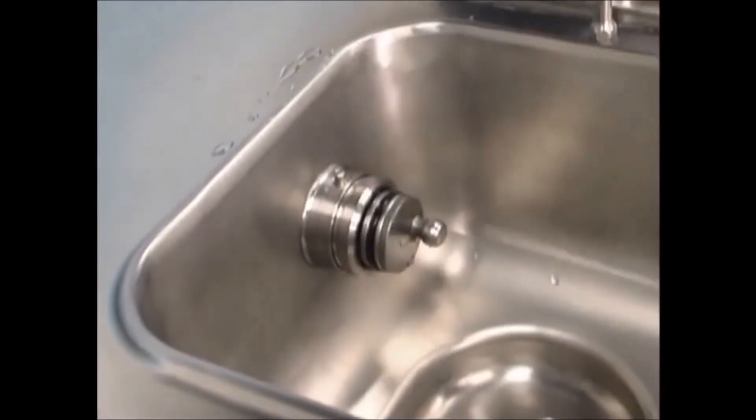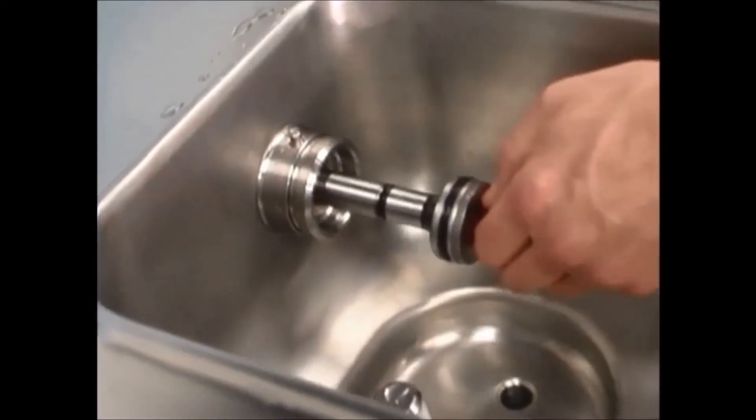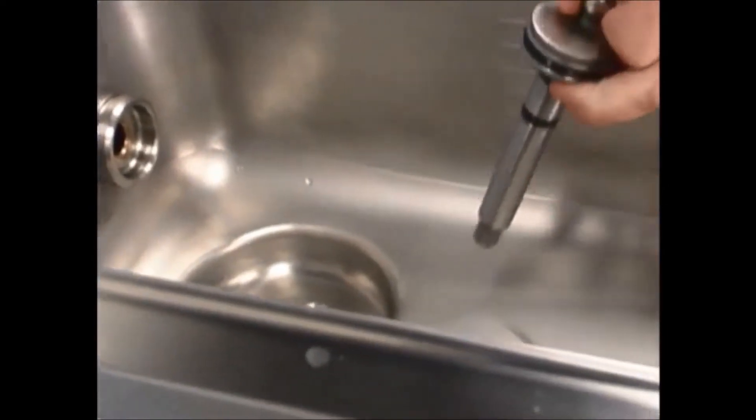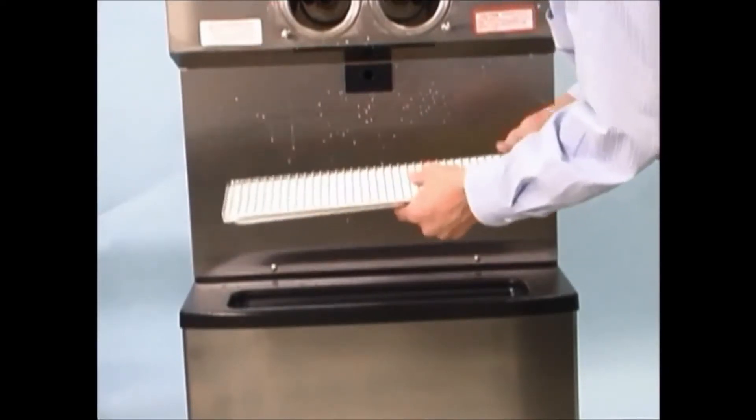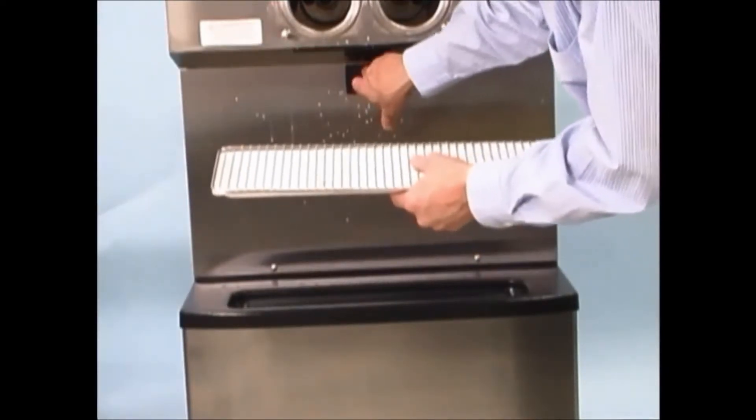Remove the pump drive shafts from the drive hubs in the rear wall of the mix hoppers. Remove the front drip tray and the splash shield. Remove all the drip pans and take them to the sink for cleaning.